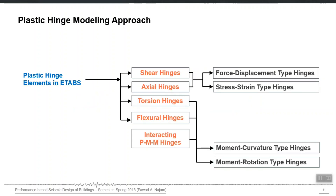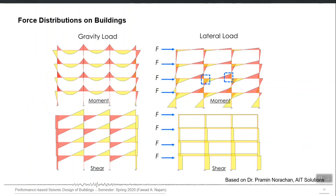These are the different types of hinges in ETABS. There are hinges which act on one particular degree of freedom, and there are hinges which affect two degrees of freedom at the same time — those are called interactive hinges. Now let us quickly discuss where we should assume the location for those hinges, where we can lump the non-linearity.